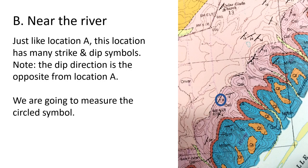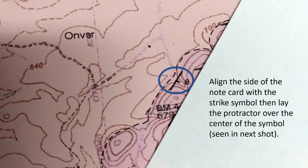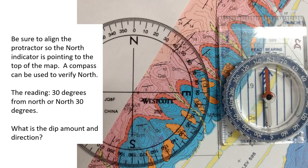For the next location, we are going to measure a strike symbol close to the river. Note that all of the dips in this area are towards the south to southeast, the opposite from the previous area. Align the side of the note card or piece of paper with the strike line. Lay the protractor on top of the strike line so north is aligned with the top of the map. This can be verified with a compass if the map has been turned to face north.